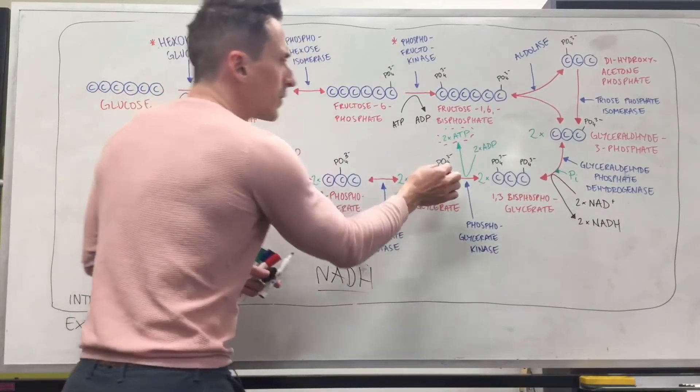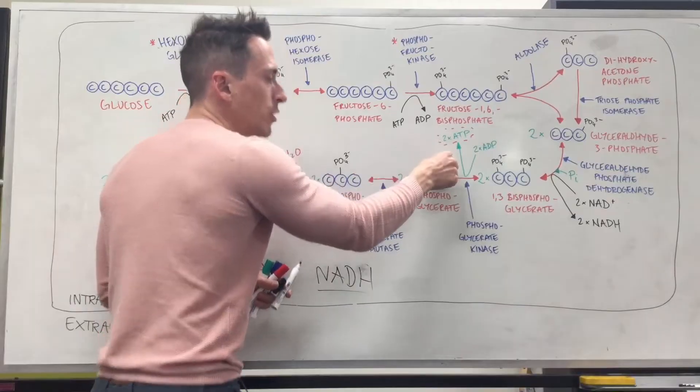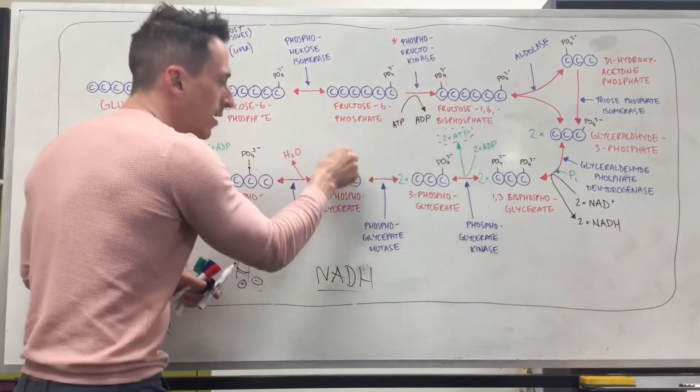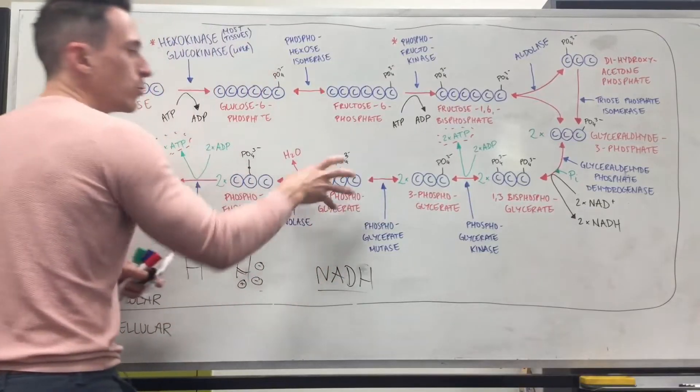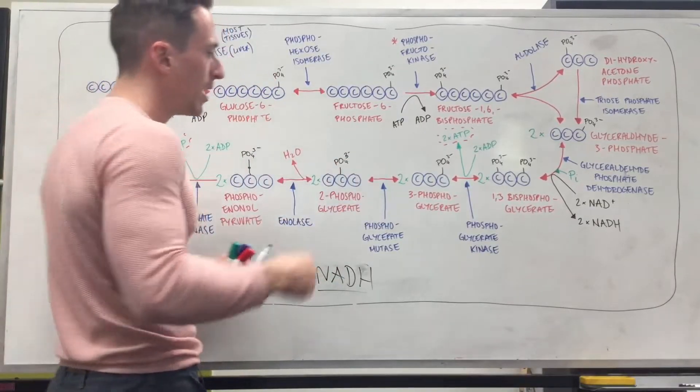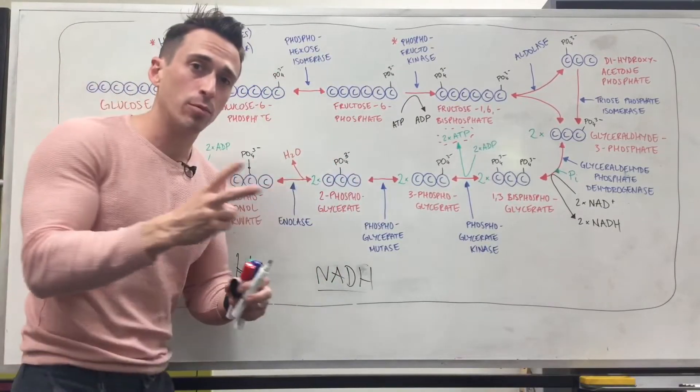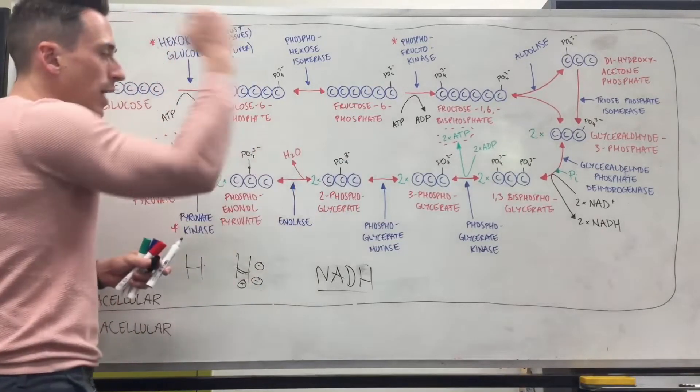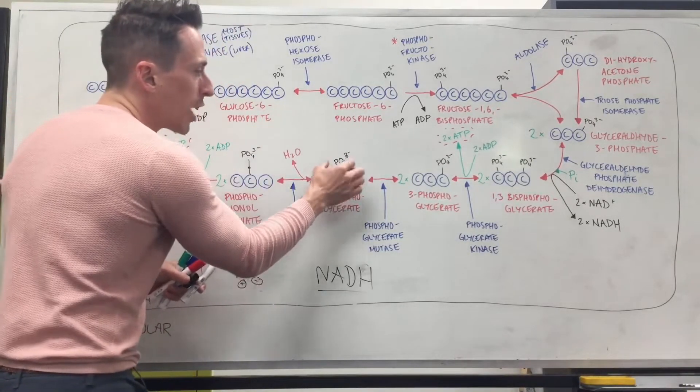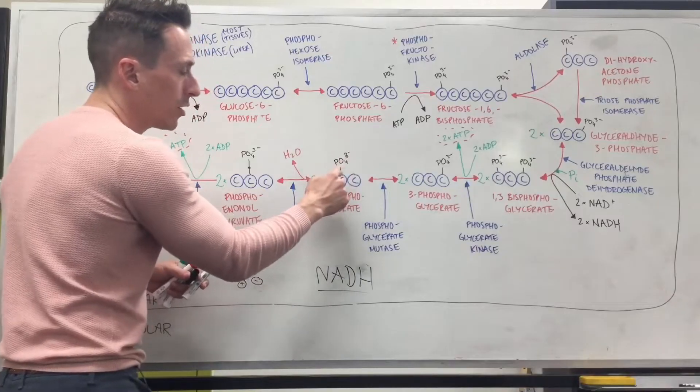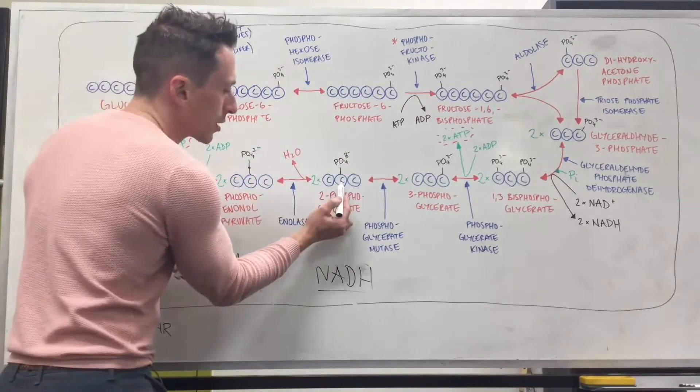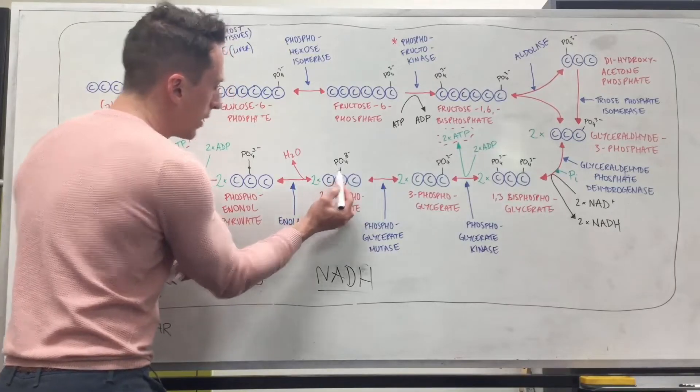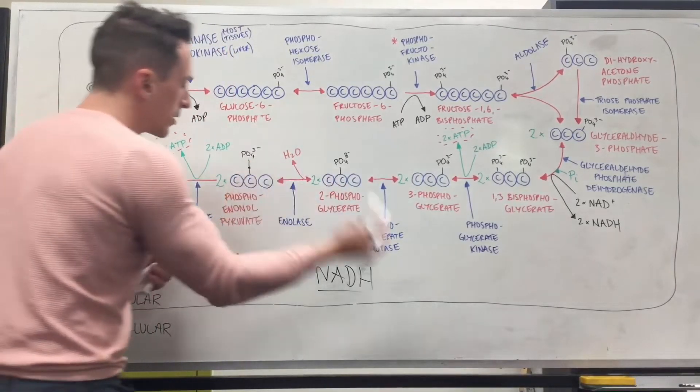Now what we need to do is we need to take that phosphate, change it from the third position to the second position. Now we've got 2-phosphoglycerate. And then what we do is we steal some water away from it. Water is simply two hydrogen atoms and an oxygen atom. When you steal that away, you end up changing... you don't change what carbon that phosphate's on, but you change where it's attached to the carbon. So instead of being directly attached to the carbon, there's an oxygen in between and that's why I've extended it here. So now we've got this phosphoenolpyruvate.